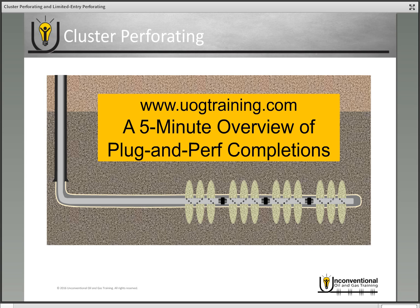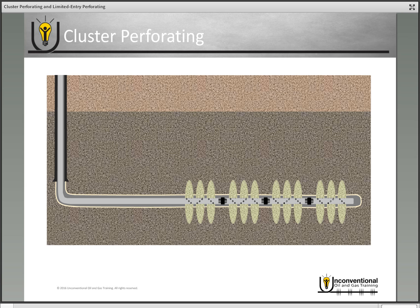To give you a basic overview of what plug-and-perf is: cluster perforating is using multiple sets of perforations called clusters in each individual stage, and you fracture out of them at the same time. You set your plug to isolate, fire multiple sets of perforations, and then fracture through them.